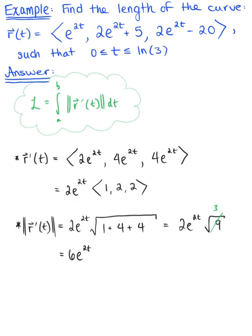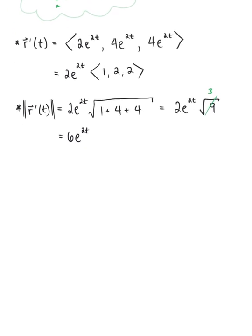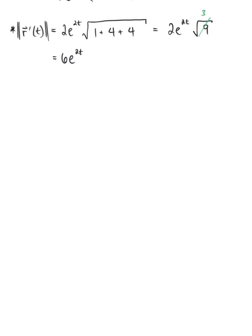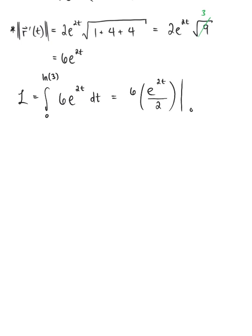We're now ready to find the length of the curve. The length is the integral from 0 to the natural logarithm of 3 of 6 times the natural exponential raised to the 2t dt. Taking the antiderivative, we're left with 6 multiplied by the natural exponential raised to the 2t divided by 2, evaluated from 0 to the natural log of 3.